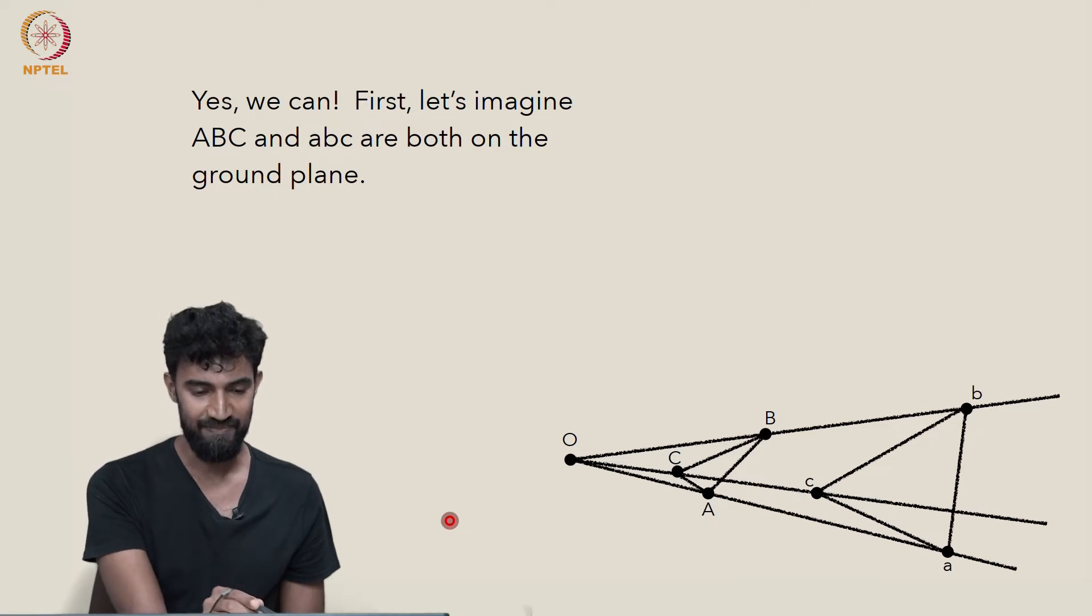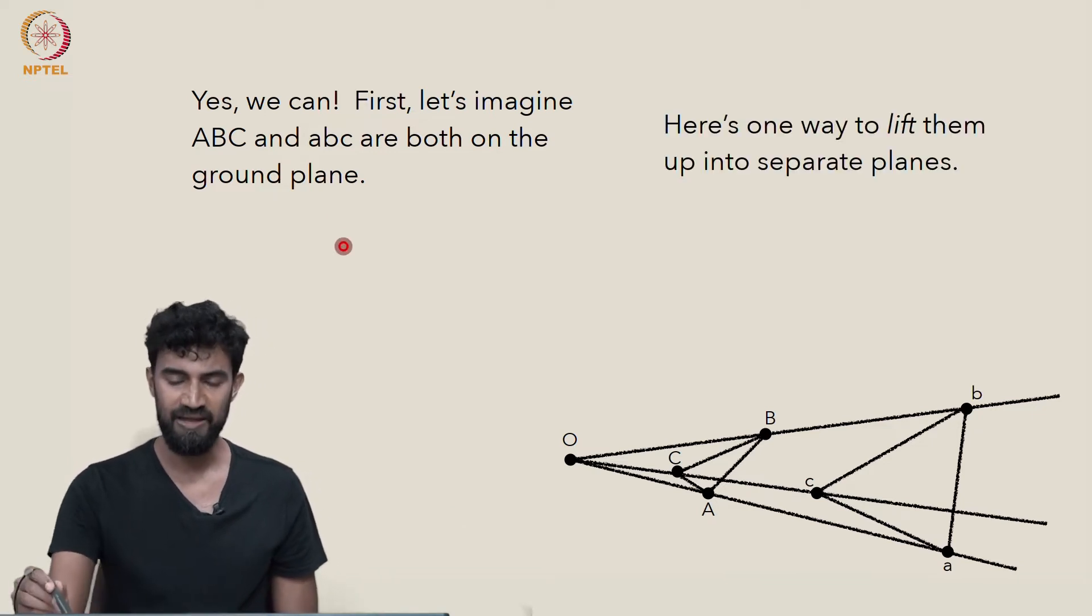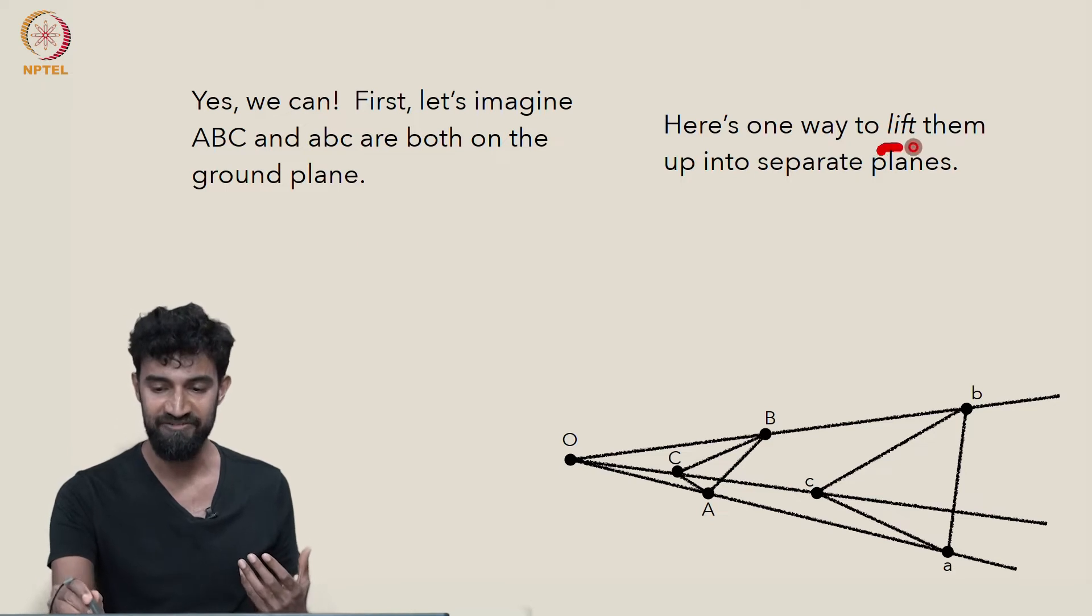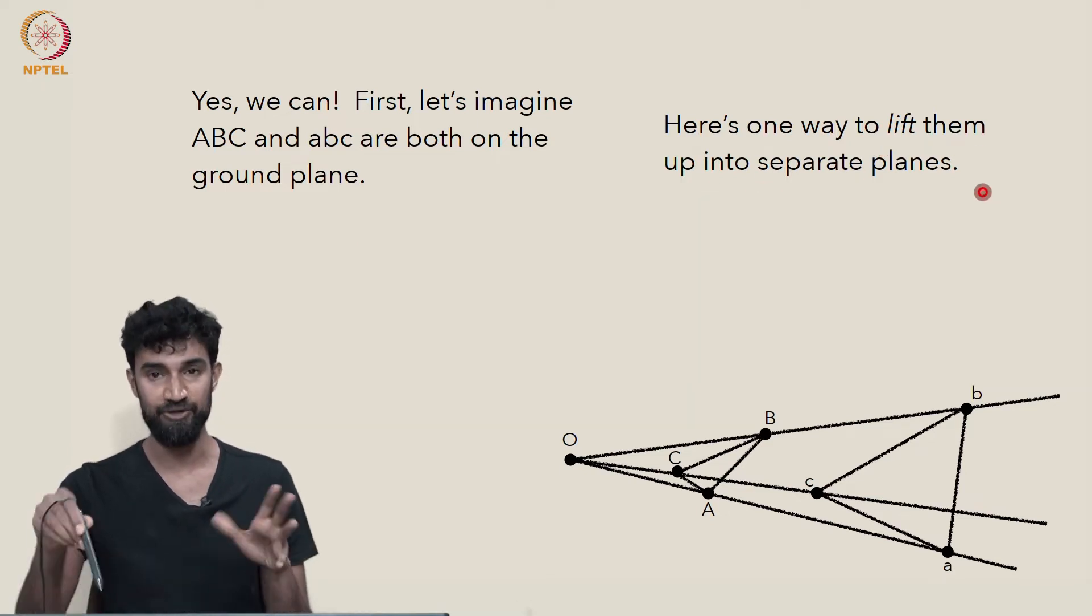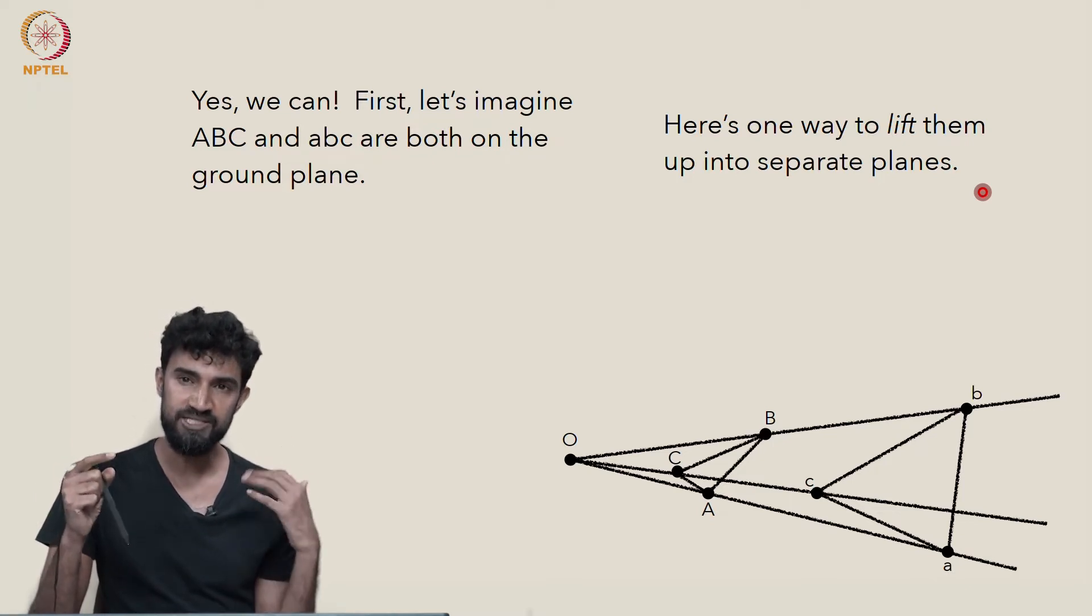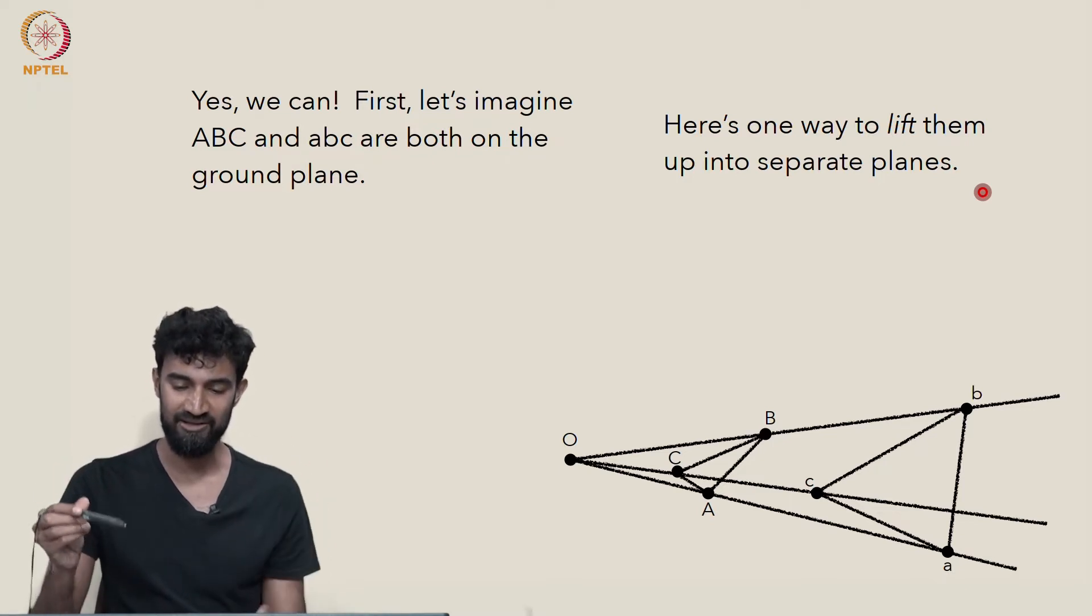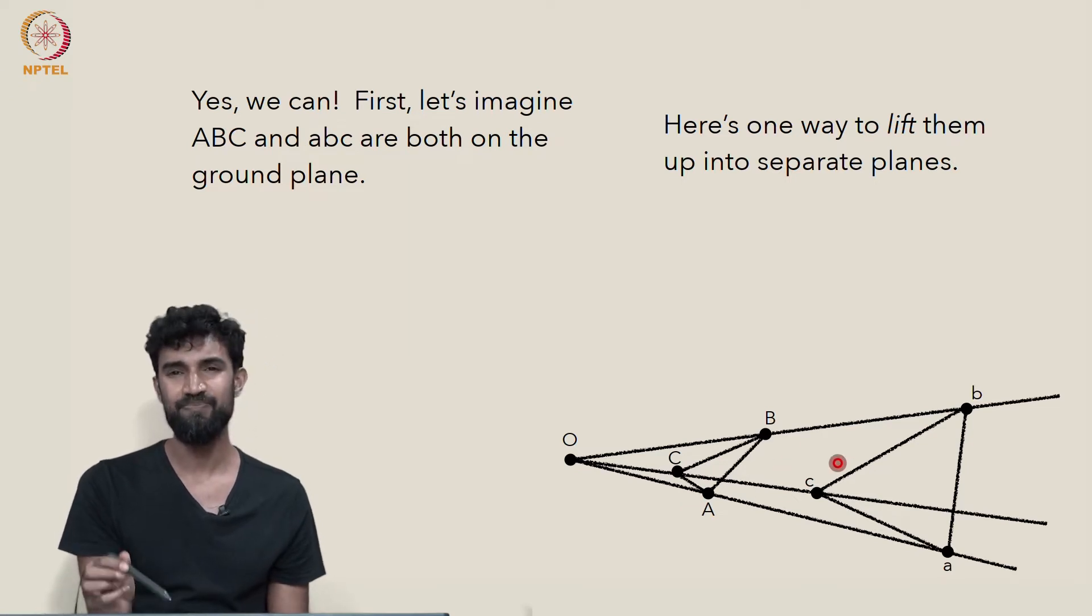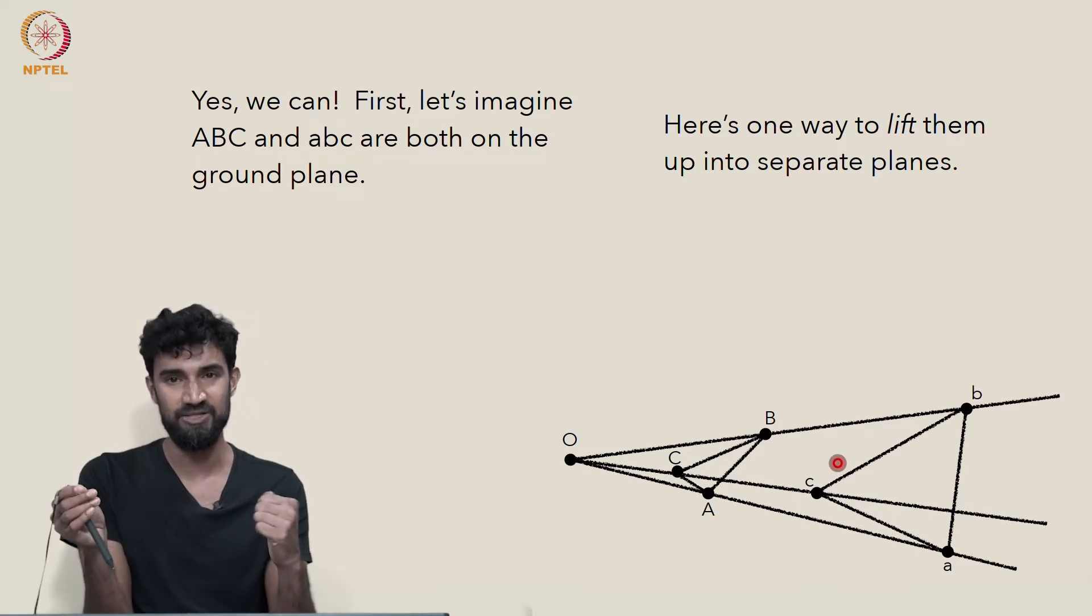And let's imagine that they're both on the ground plane, and I'm going to give one way of lifting them up into separate planes. So we're going to construct associated triangles, new triangles that are almost like these, but are lifted into separate planes so they're no longer coplanar.